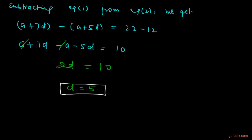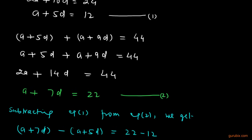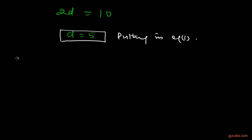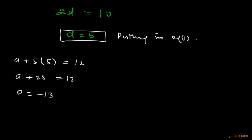Now we shall substitute this value of D into equation 1 to find the value of A. Equation 1 is A plus 5D equals 12, so we get A plus 5 times 5 equals 12, which means A plus 25 equals 12. Therefore, A equals negative 13. We have found the value of the first term.